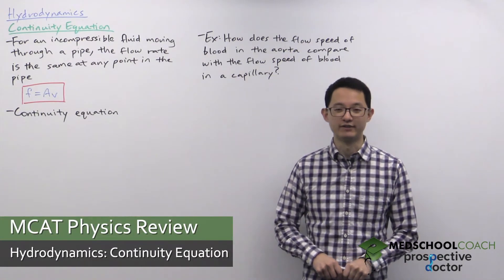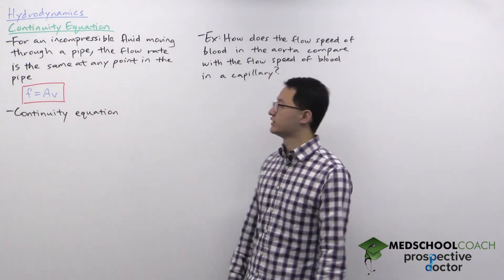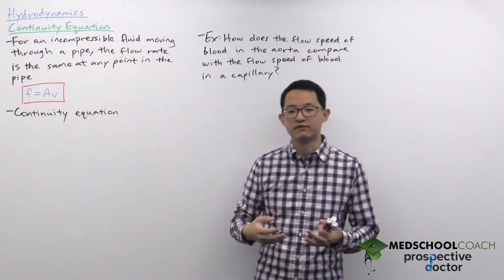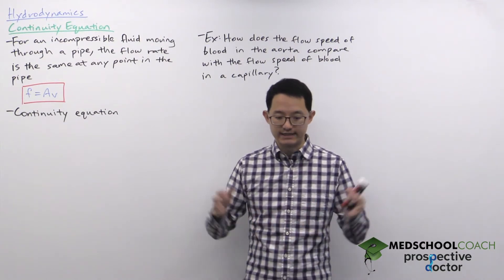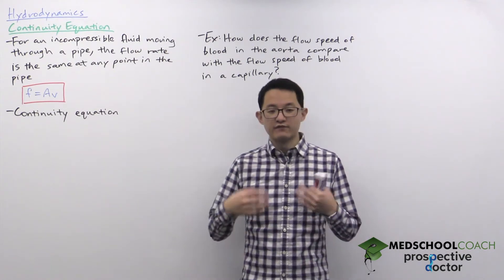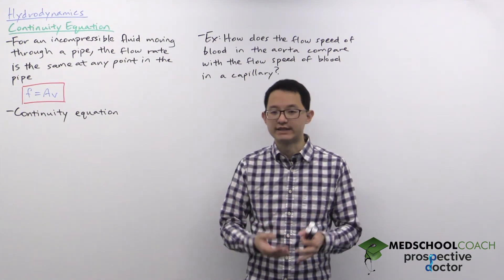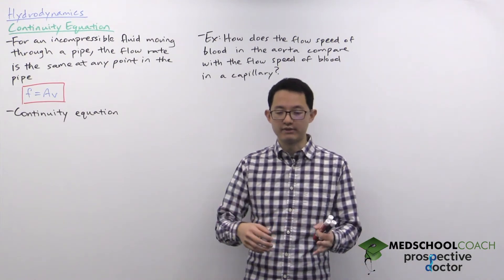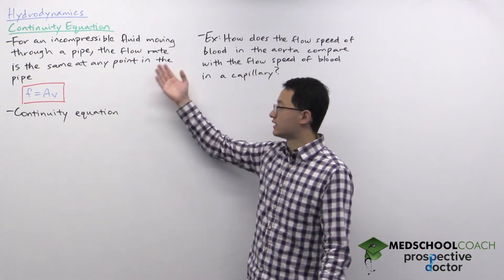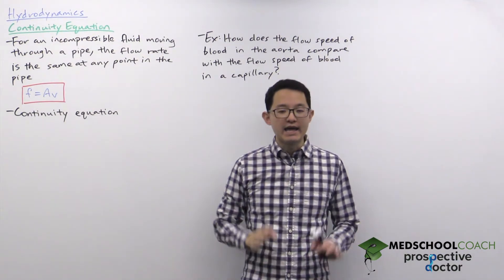In this video we're going to go over the continuity equation. The continuity equation applies to a situation where you have an incompressible fluid moving through a pipe. An incompressible fluid is one where the volume cannot change — it can't get smaller or larger. One result of this is that whatever amount of fluid enters the pipe has to be the same amount that exits. So the flow rate into the pipe equals the flow rate out, and in general the flow rate is the same at any point in the pipe.